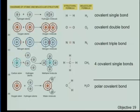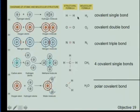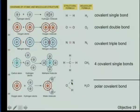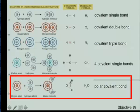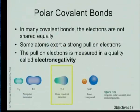Sometimes — and this becomes important when we talk about water — it's not always a 50/50 deal, meaning those electrons are not always equally shared. With two hydrogens sharing electrons, one is not going to pull any more than the other. Same with oxygen and oxygen, or nitrogen and nitrogen. But sometimes there is a difference in how much pull one element has versus the other — there is not equal sharing taking place. If electrons are shared but not equally shared, we have a polar covalent bond.